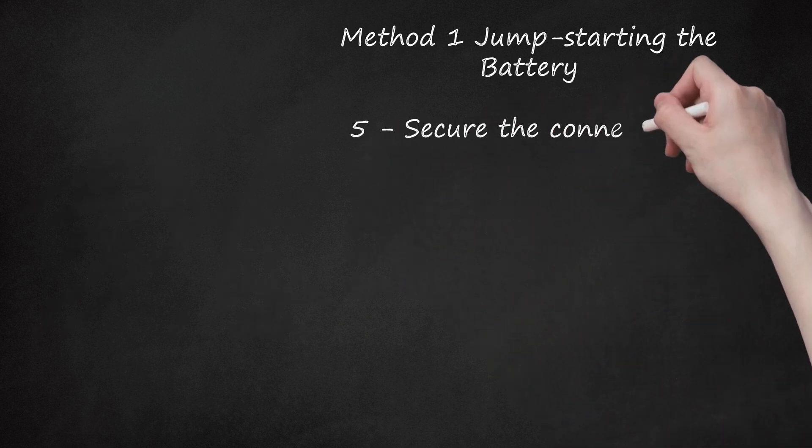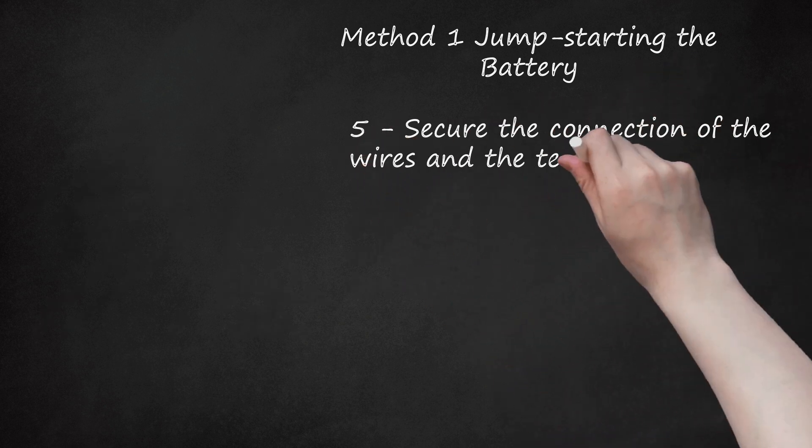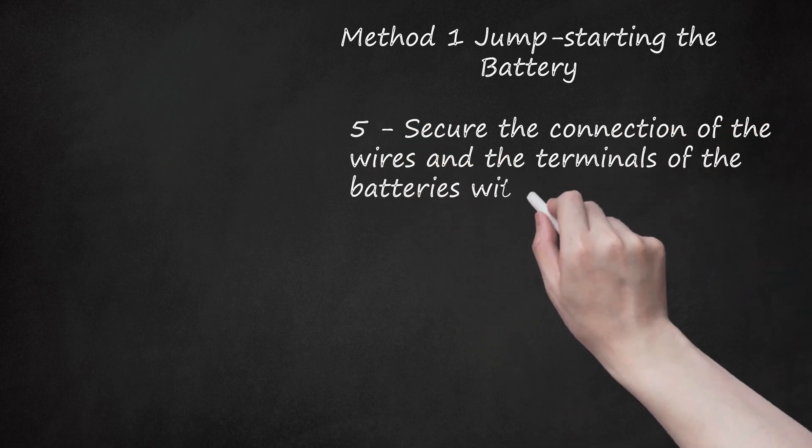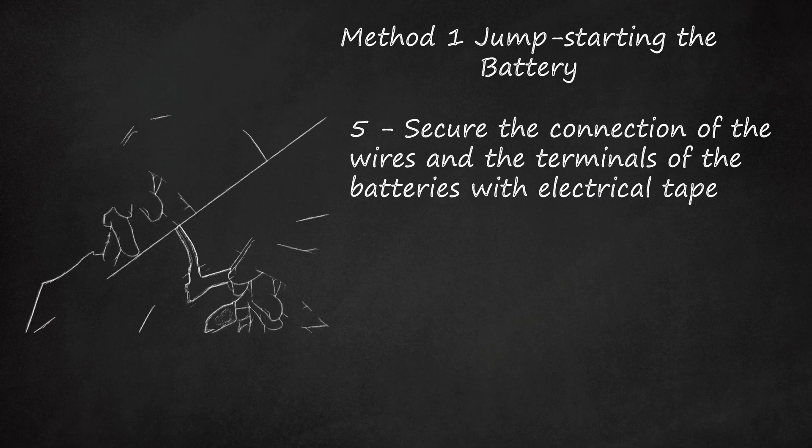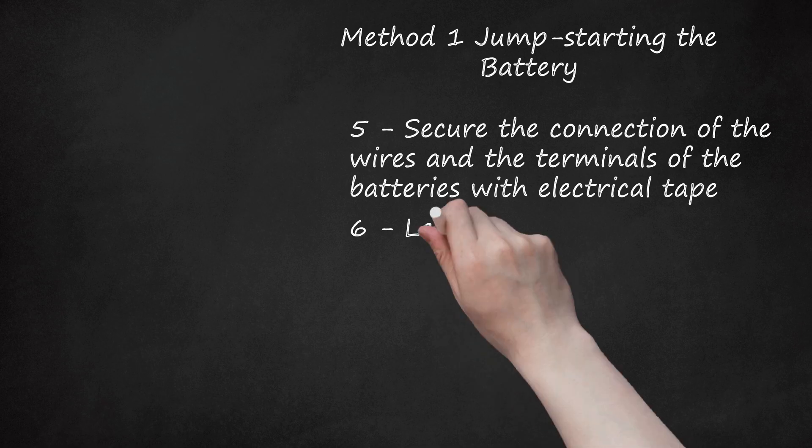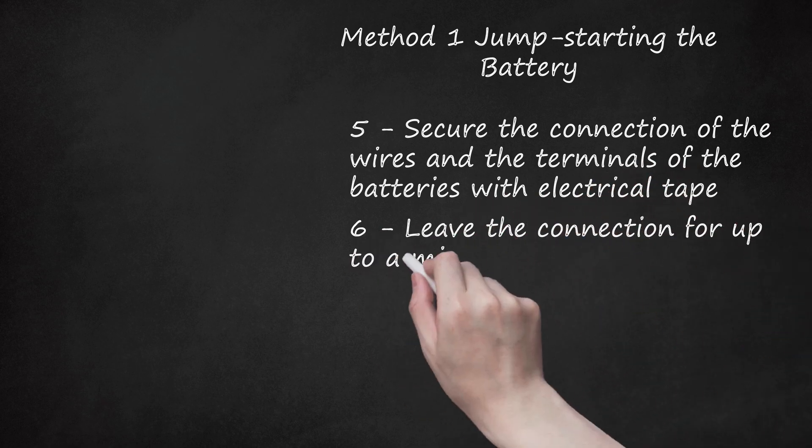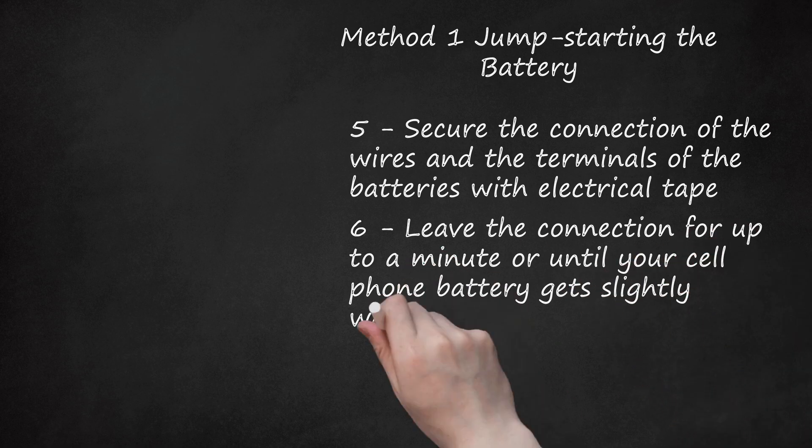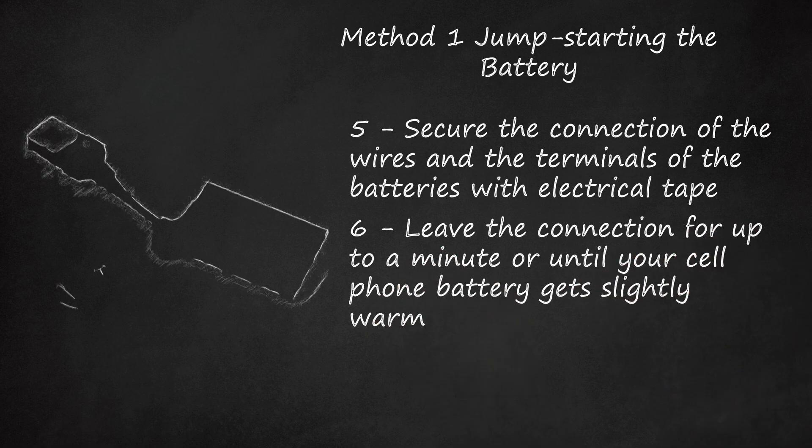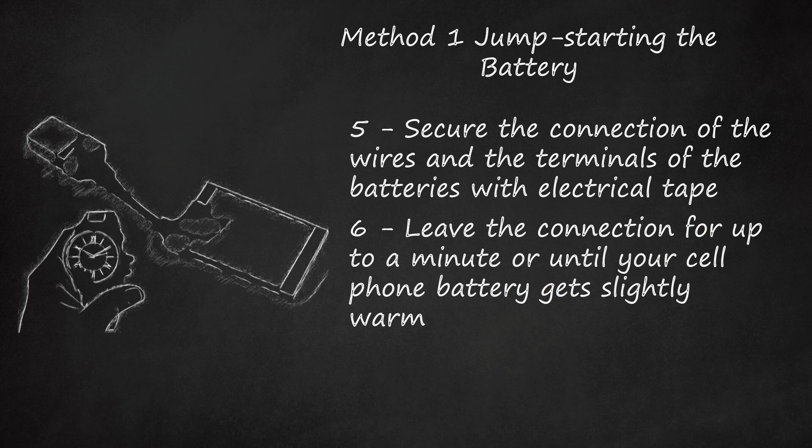Secure the connection of the wires and the terminals of the batteries with electrical tape. Place them in a cool, dry place, away from any water or heat. Leave the connection for up to a minute or until your cell phone battery gets slightly warm. You should check the battery every 10 seconds or so for heat.